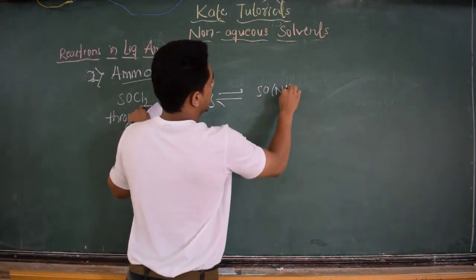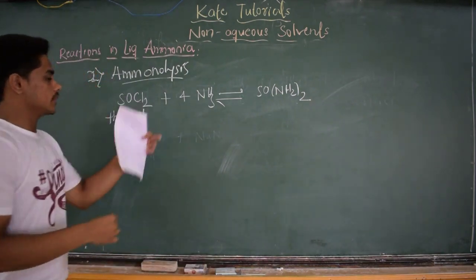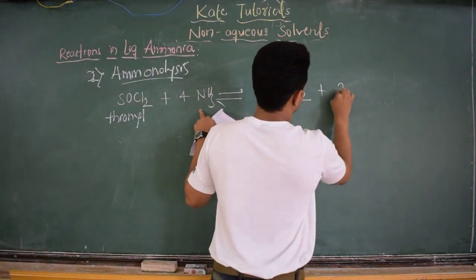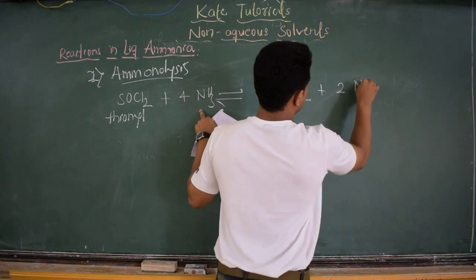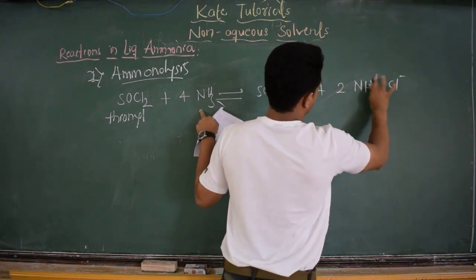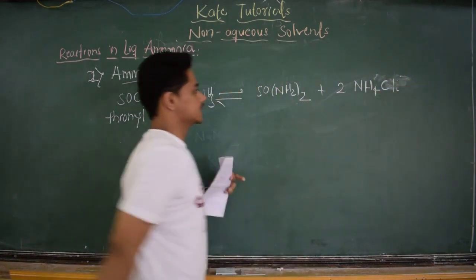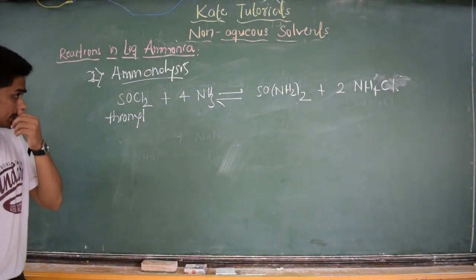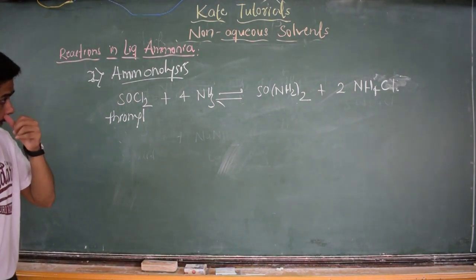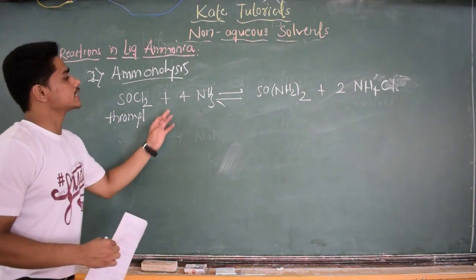Consider thionyl chloride (SOCl₂) reacting with 4 molecules of ammonia. We rearrange to get NH₂⁻ and 2 molecules of NH₄⁺ Cl⁻, giving NH₄Cl. So SOCl₂ plus 4NH₃ gives SO(NH₂)₂ plus 2NH₄Cl. This reaction is also an example of aminolysis.